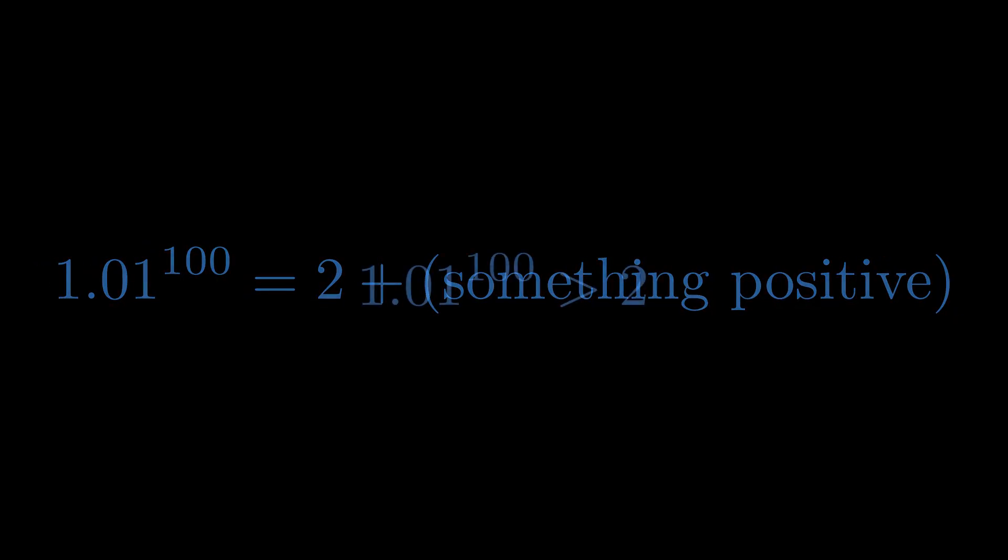Think of it on a number line. We start at 2, then take steps to the right. We must end up at a number larger than 2. It's not an approximation. It's a mathematical certainty.